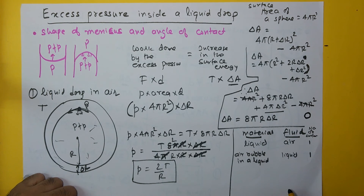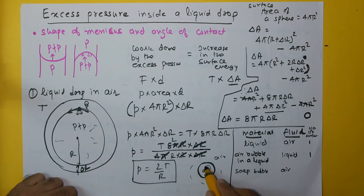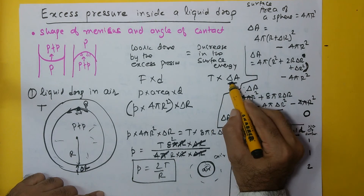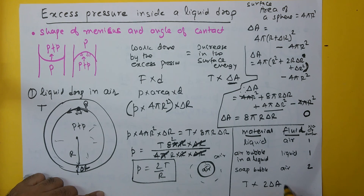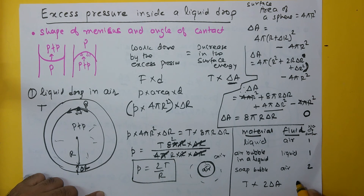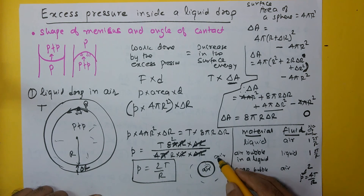Whereas if we take the example of a soap bubble in air, the fluid is air on the outside, and inside the soap bubble there is also air — so you have air on both sides of the soap film. The number of surfaces becomes two. When this happens, when you calculate delta A you have to multiply by two, so the equation becomes T times 2 times delta A. This means you get an extra factor of two, and the equation changes to p equals 4T/r. So when we have two surfaces like in a soap bubble, p equals 4T/r, whereas for a liquid drop or an air bubble in liquid, p equals 2T/r.